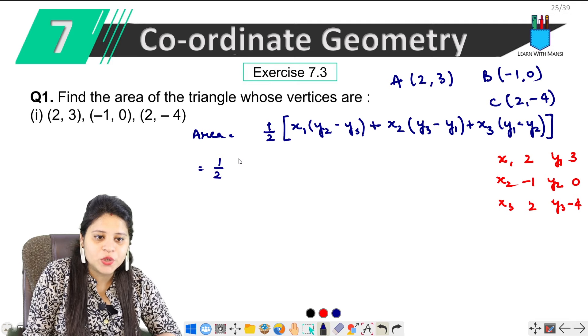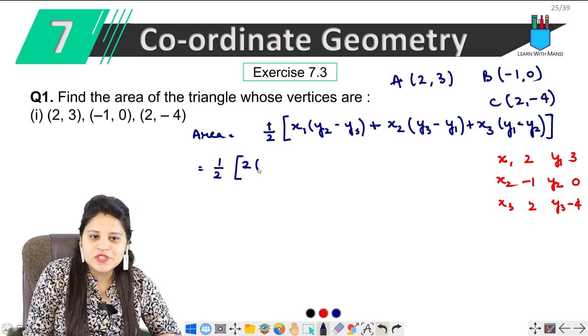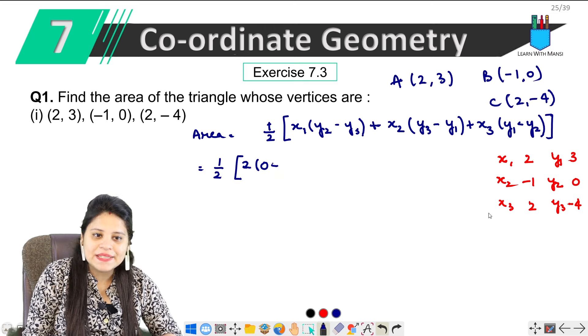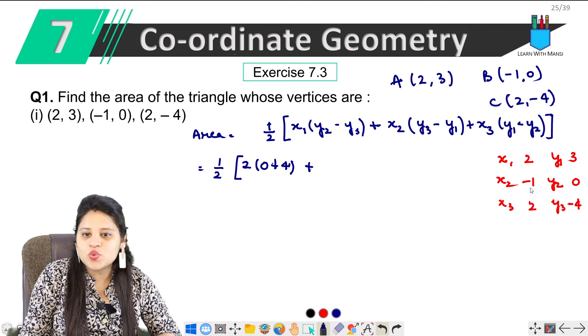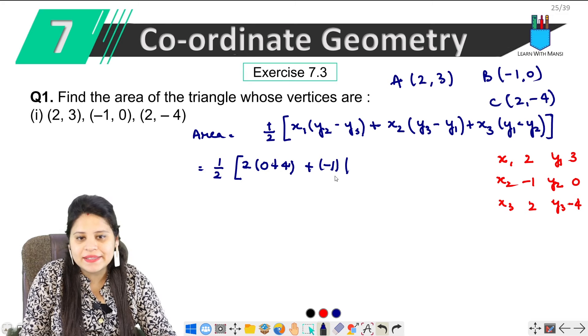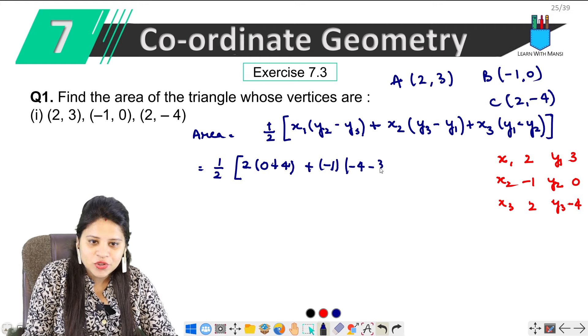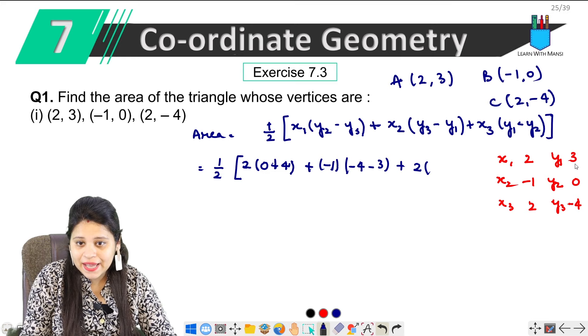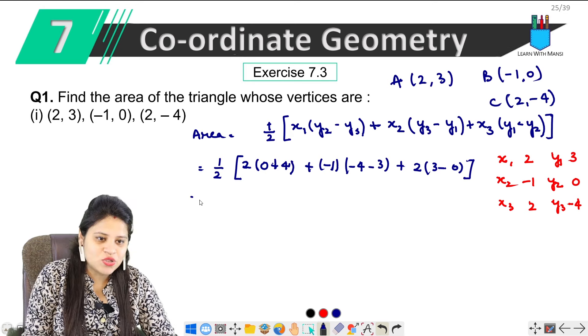So we have, start with 1 upon 2. What is x1? 2. Then y2 is 0, minus y3 is minus 4, it will be plus 4. So, what is x2? Minus 1. Then, what is y3? Minus 4. Minus y1 is 3. Then, plus x3 which is 2. What is y1? 3. Minus y2 which is 0.